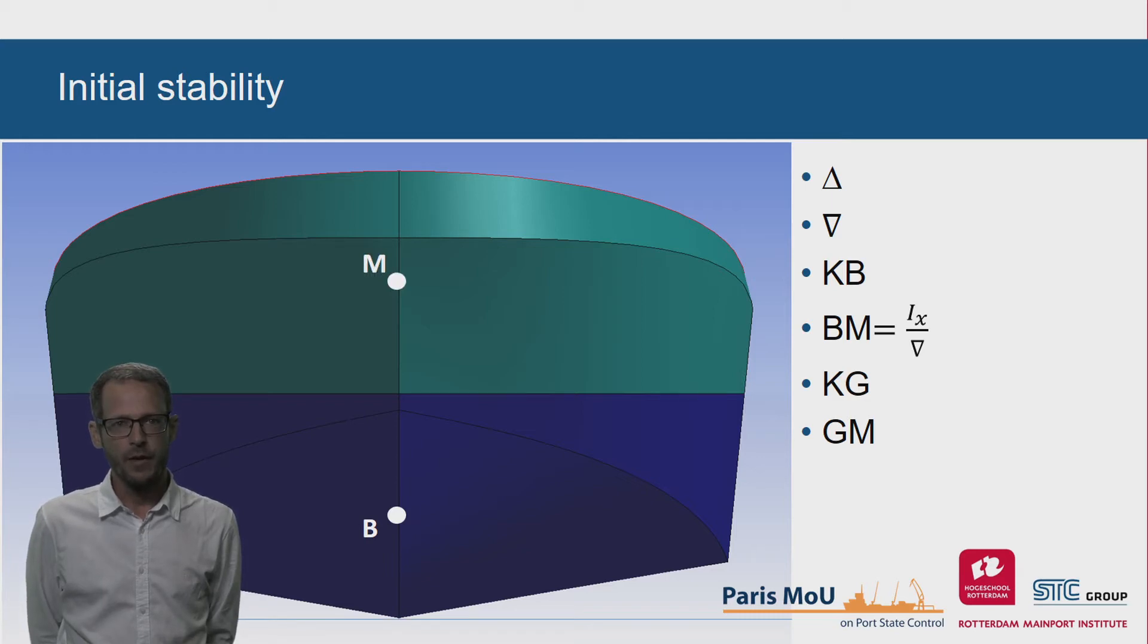The distance BM can be calculated. It equals the transverse moment of inertia of the water plane divided by the current volume. BM or KM can also be found in the hydrotables.